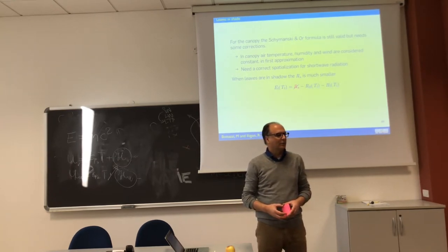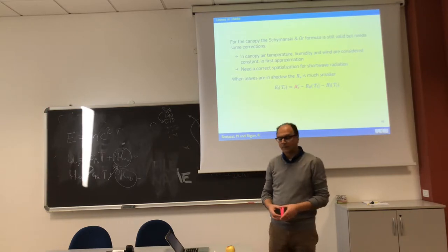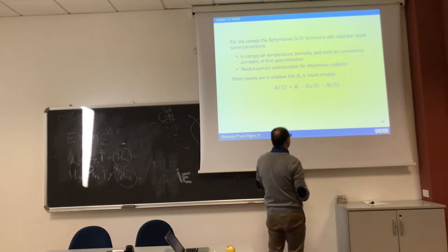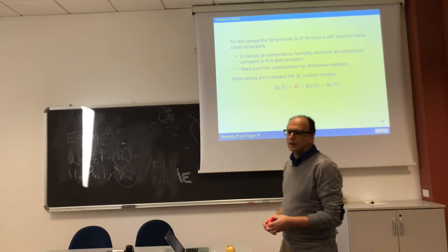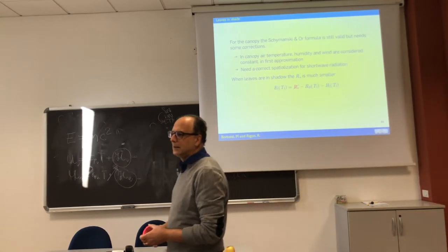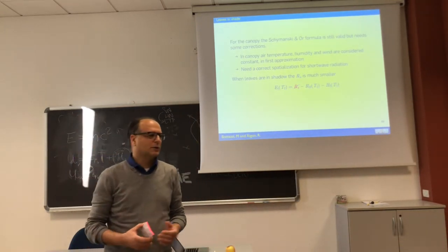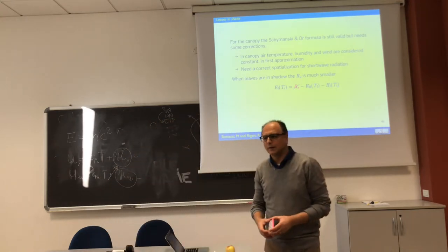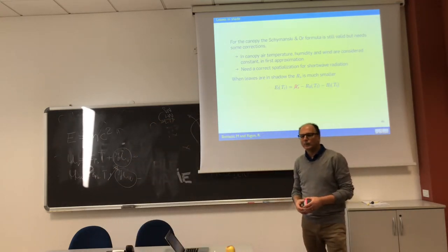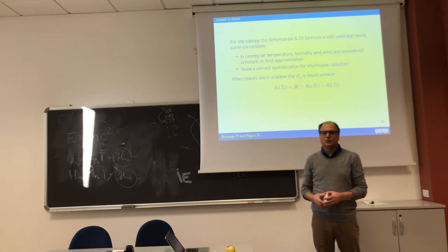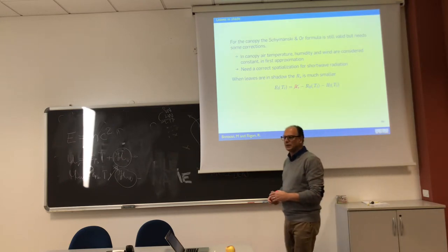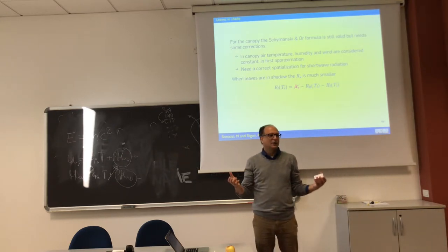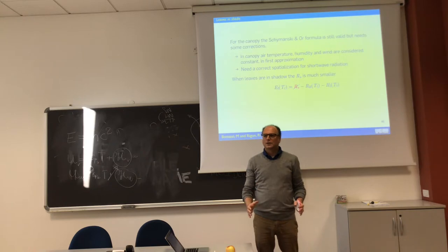The first one thing that Michele did actually was to say what is going on when we have a canopy. There's a first step to go to catchments. What happens at the canopy is that for most of the canopy, we don't have direct solar radiation. We have an indicator which is the leaf area index.